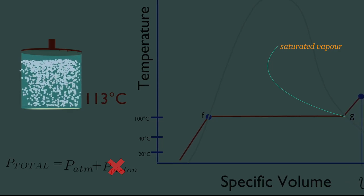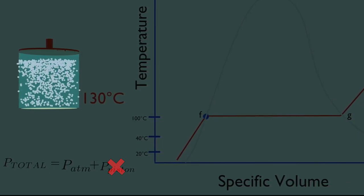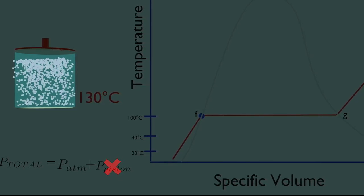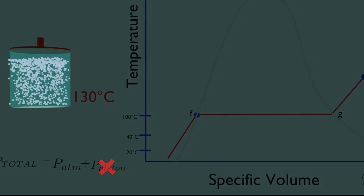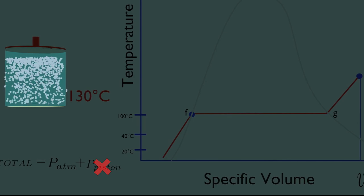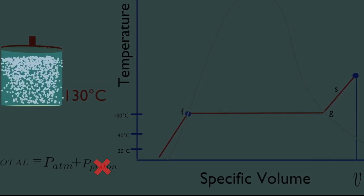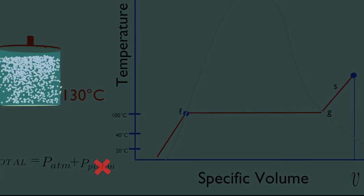Now, further heating at fixed pressure results in increases in both temperature and specific volume and water is in superheated vapor region. So point S is superheated vapor region.